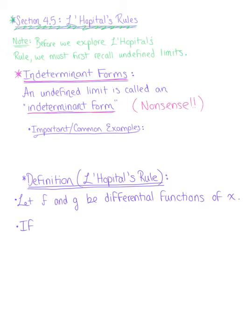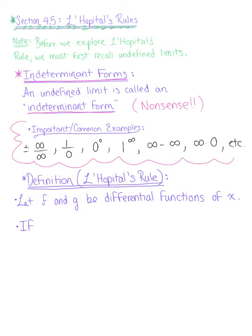Some common examples that we will see in this course are plus or minus infinity over infinity, 1 over 0, 0 to the 0, 1 to the infinity, infinity minus infinity, infinity times 0, and many more. These are just a few of the common indeterminate forms that we need to be on the lookout for.